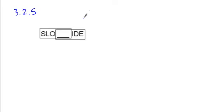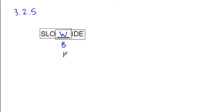As far as finding the letter that fits both of these words — SLO blank and blank IDE — there are three different letters you could substitute in to make relatively common words. The one that most students see is W, so slow and wide would be the two words. But you could also use B to get slob and bide, or T to get slot and tied.